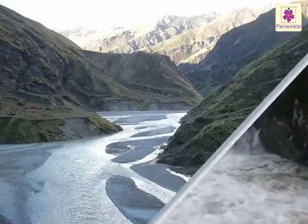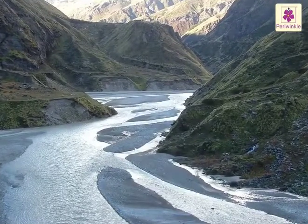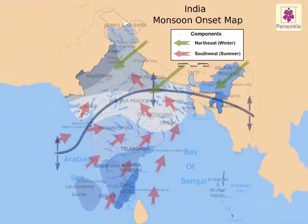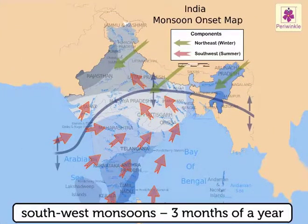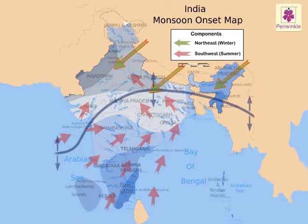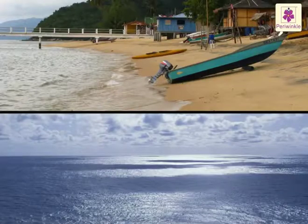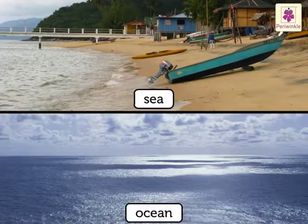Rain-fed rivers flow with full force during the rainy season, but some of these are reduced to small streams during the dry months. India receives rain from the southwest monsoons for almost three months of a year. We also get rains from the northeast monsoons in the months of October to December. Many parts of southern India receive considerable rain from the northeast monsoon, and Tamil Nadu gets nearly half its annual rain during this monsoon.